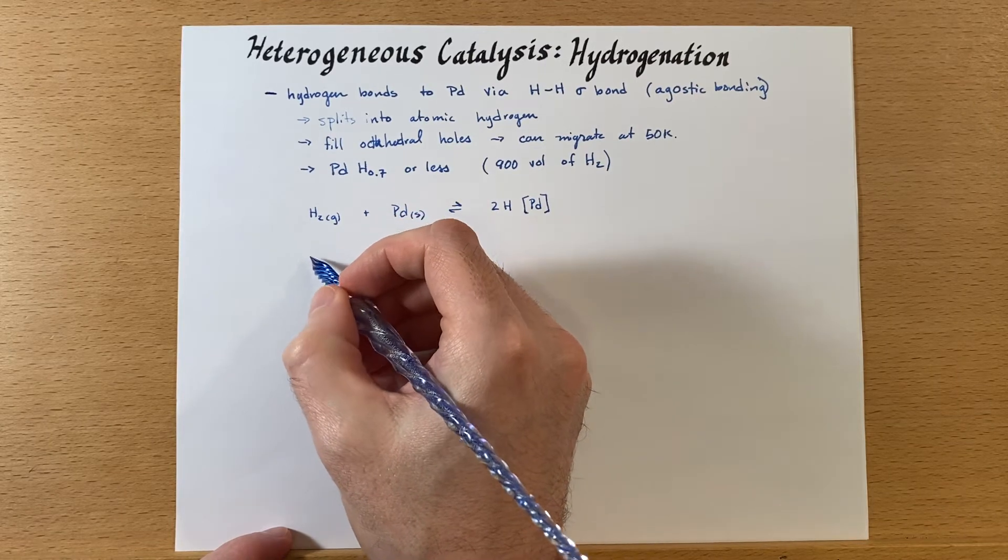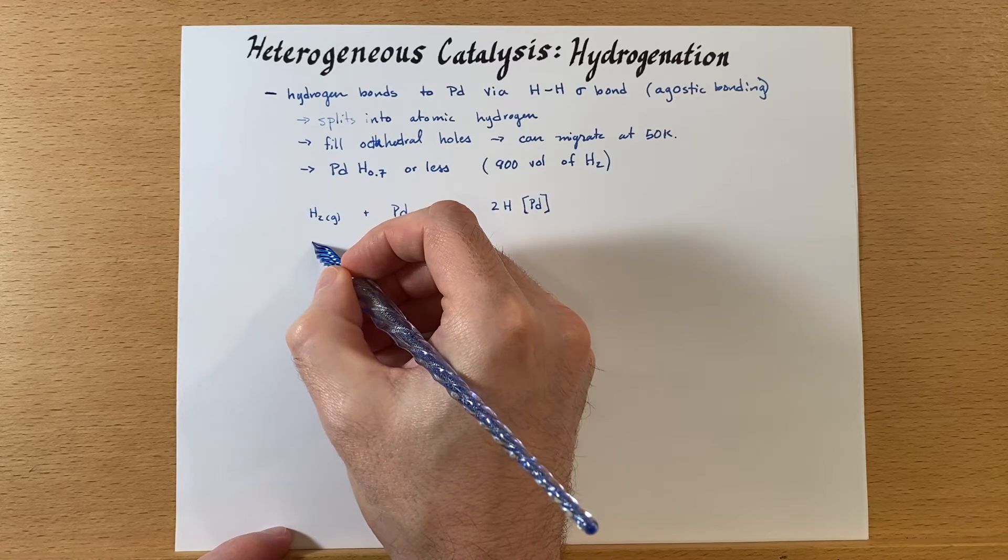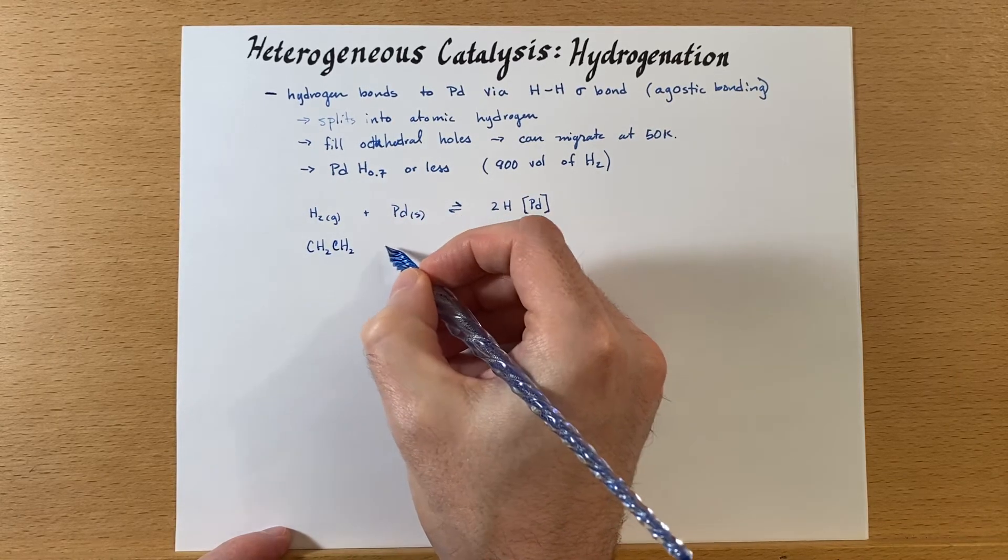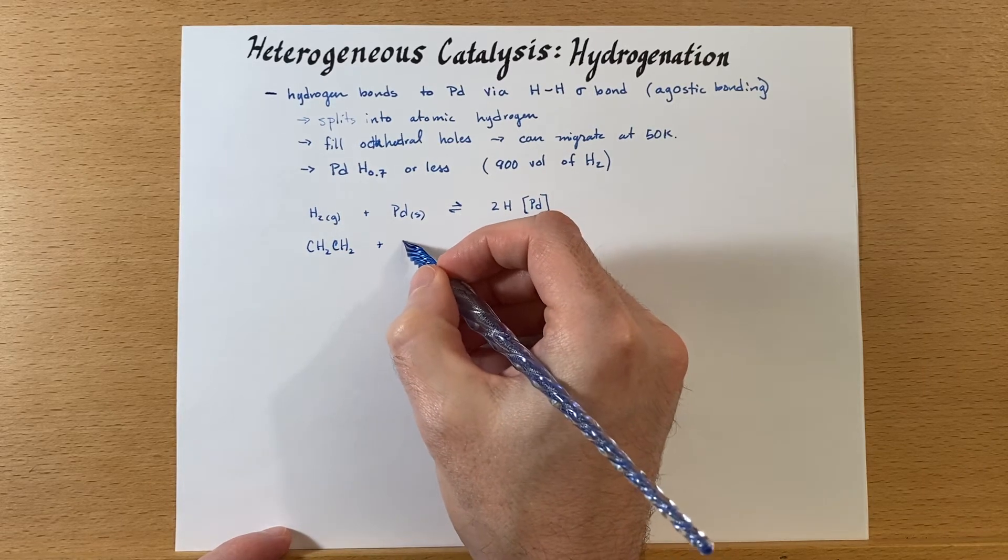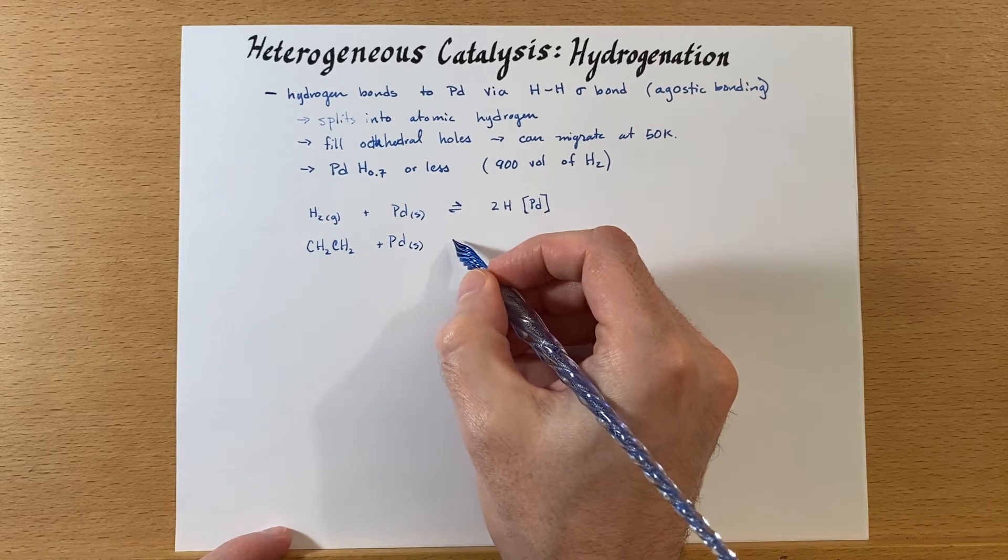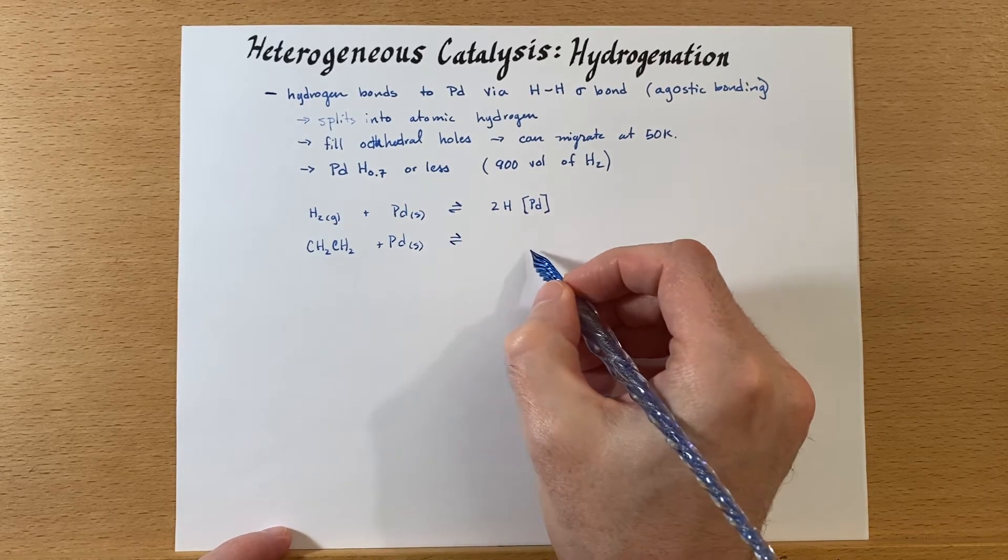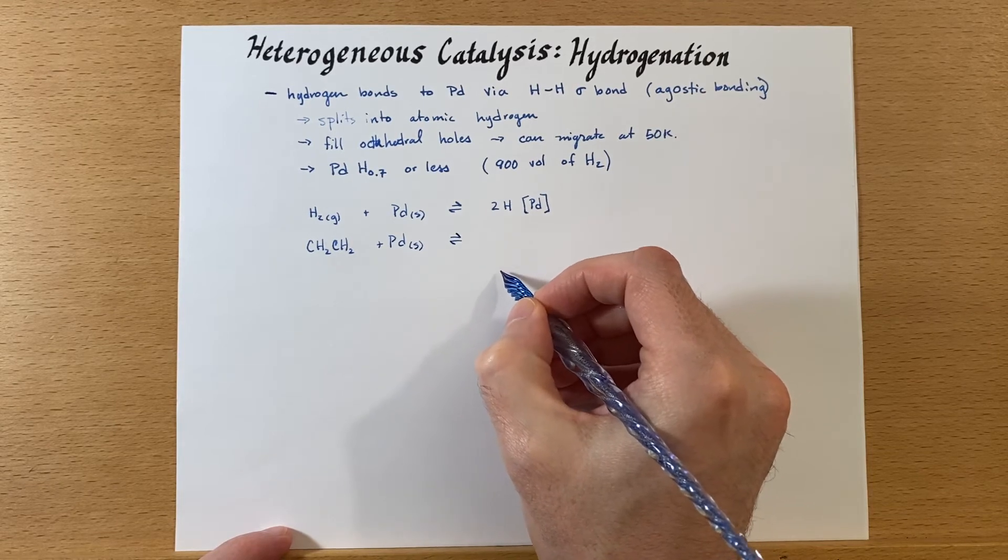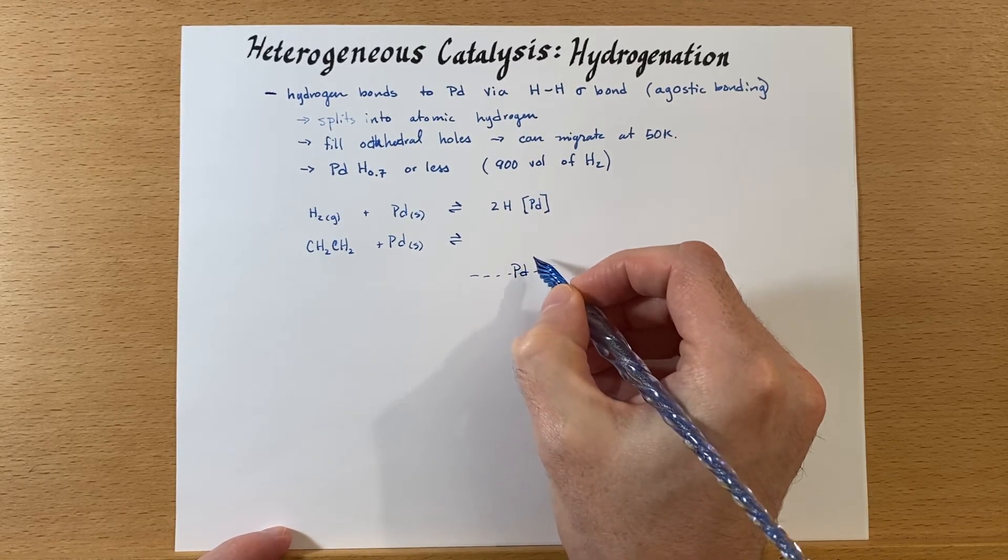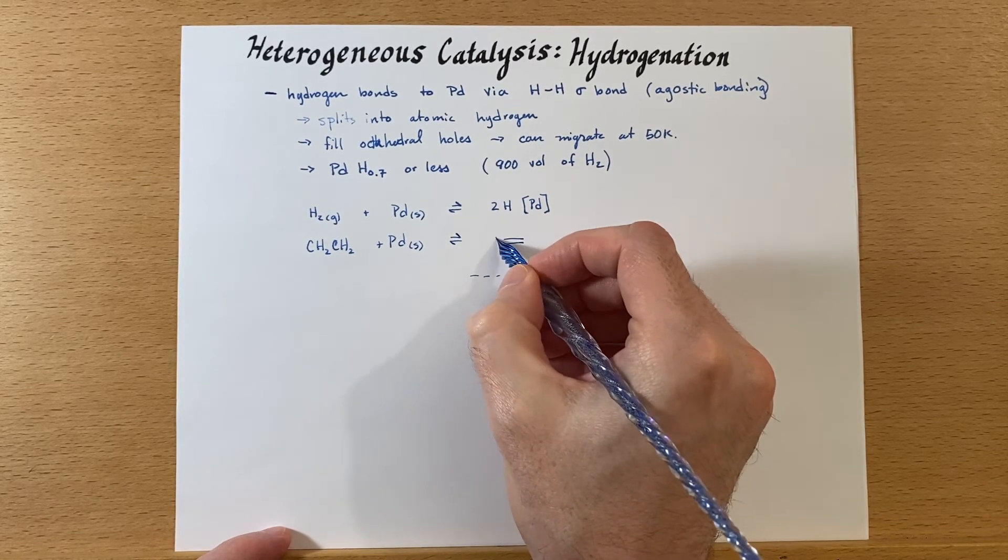Next for simplicity we're going to hydrogenate ethene, so CH2CH2, and we add that to the palladium and we'll get a pi complex. So we'll have a surface of palladium and we'll have this pi complex interacting with it.